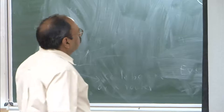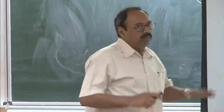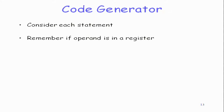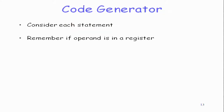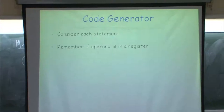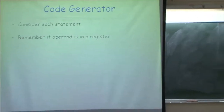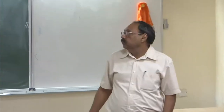Let us look at what the code generator does. Assuming we have three-address code and a machine model in mind, this three-address code is to be converted — covering arithmetic, logical, and Boolean expressions — into machine syntax. For each statement, which is generally either of the form x = y op z or if x rel y then goto some label, we want to remember if an operand is in a register.